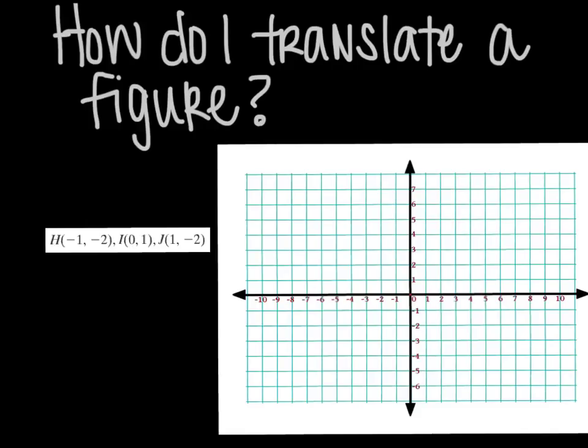How do I translate a figure? So here are some points and I'm going to plot them and then I will show you how to translate them. So H is (-1, -2), which is going to be right here. That's going to be H. I is (0, 1). And J is (1, -2). So we have a triangle here. Looks like this. So now I'm going to translate it. And let's say I wanted to translate it up 4 units.